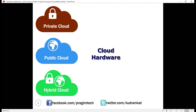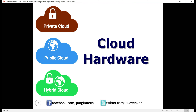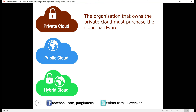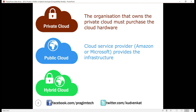First, let's talk about cloud hardware. As far as the private cloud is concerned, the entire cloud infrastructure — that is the physical servers, storage, networking, etc. — must be procured by the organization that owns the private cloud. When it comes to the public cloud, the public cloud service provider like Amazon or Microsoft provides the infrastructure.